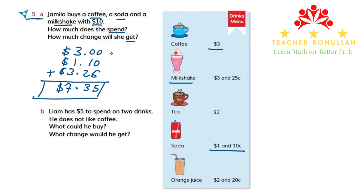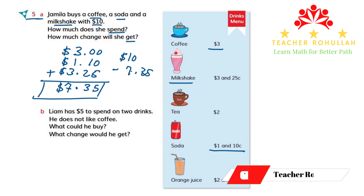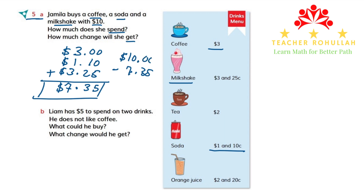Now to find how much change she gets back, we have to subtract $7.35 from $10. So I will write $10 minus $7.35. To easily subtract, I will give a decimal point and two placeholder zeros to the right of $10. Now I can easily subtract.